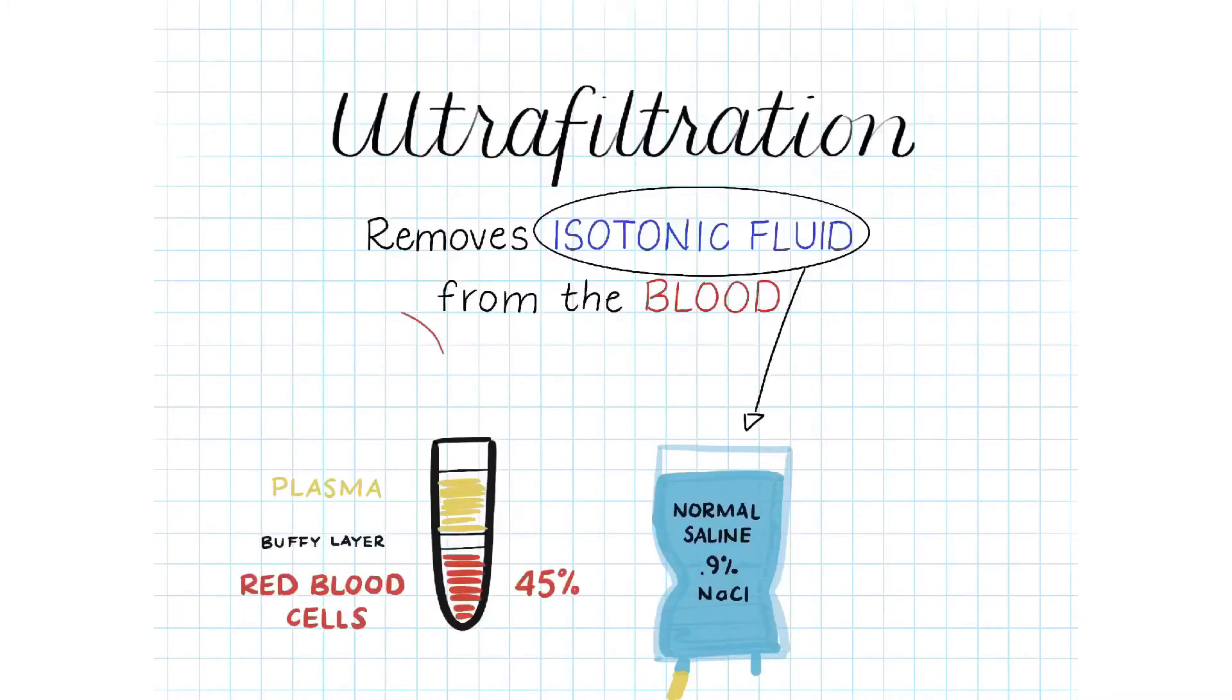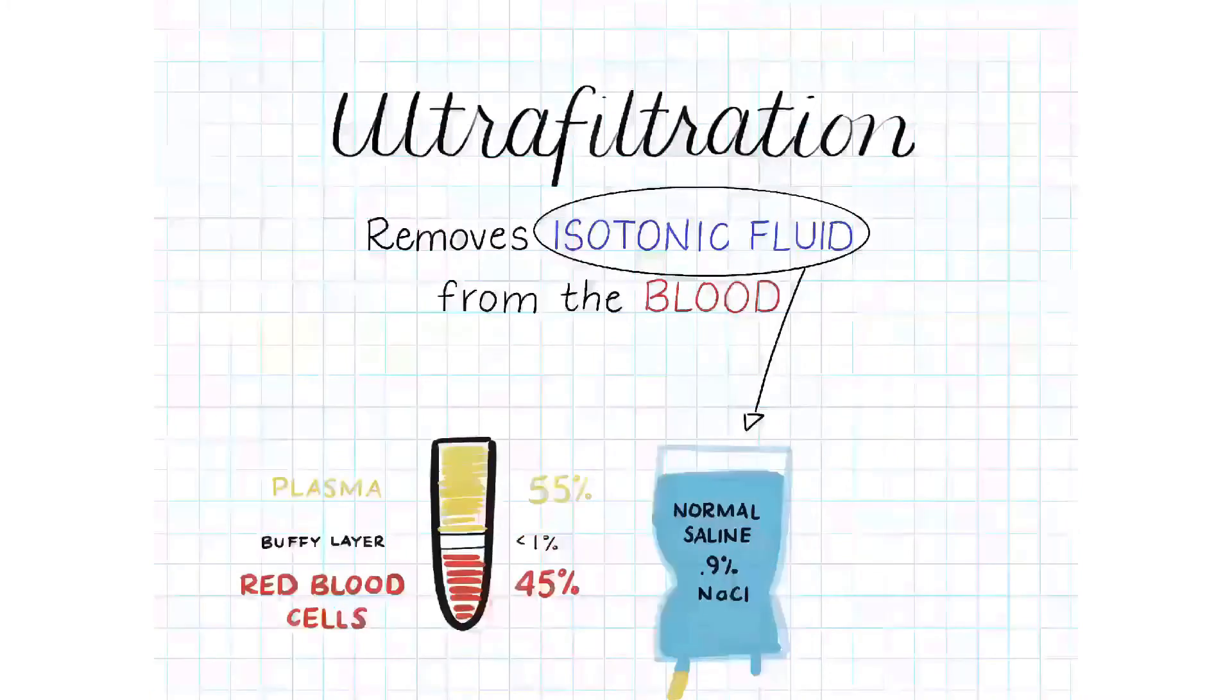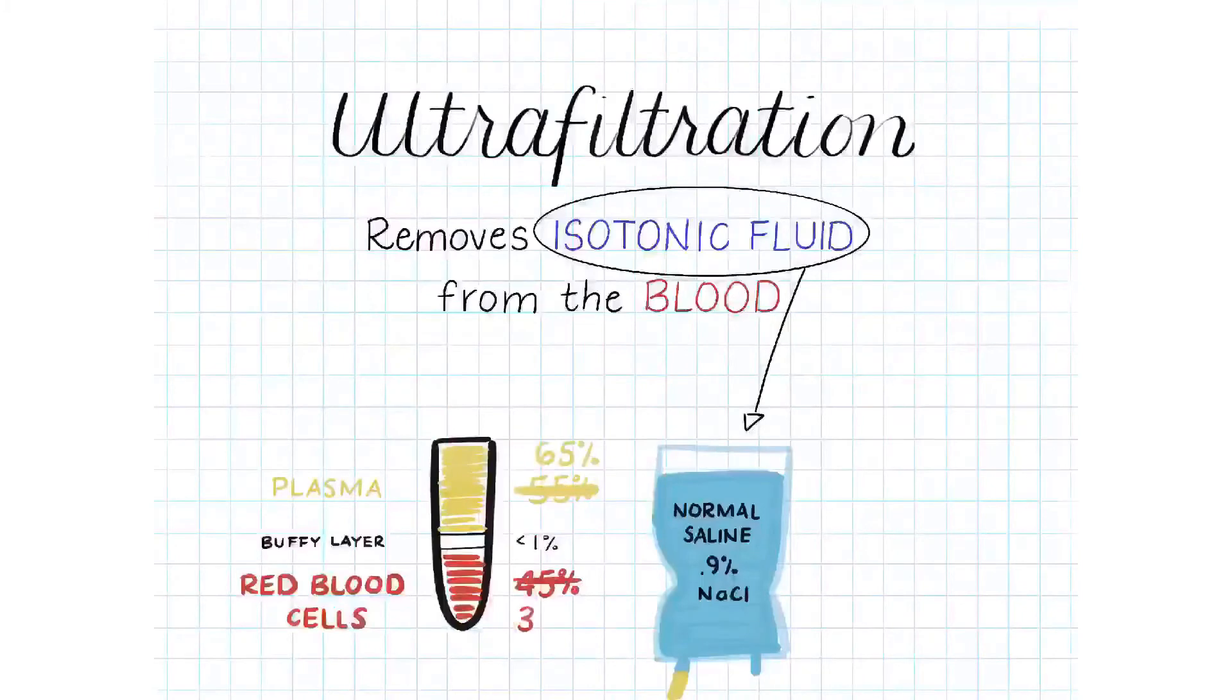Meaning 55% is left over to the plasma because less than 1% is that buffy layer. What happens with patients when they're in fluid overload is that plasma water is a larger portion of that blood breakdown because they have all of this excess fluid in the blood. So the patient's hematocrit,